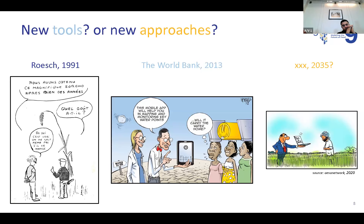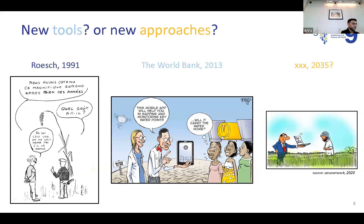These are the kind of key questions we need to ask when we think about tools and approaches. Twenty-five years later, the World Bank does it again with a cartoon: 'this mobile app will help you solve all your problems.' In the first case the scientist and the farmer were talking, but in the second the ladies are just listening but not saying anything. So I'm asking myself: in 2035 — just 13 years from now — what are we going to present the farmer with? Are we just repeating the same mistakes, just taking advantage of technology?